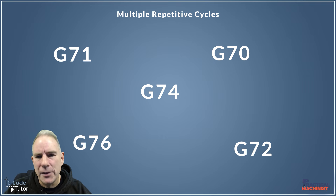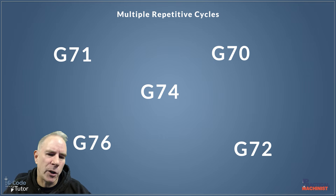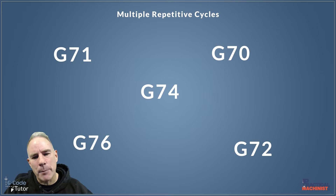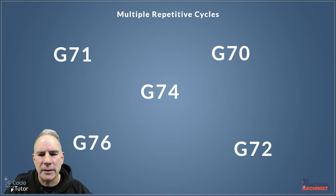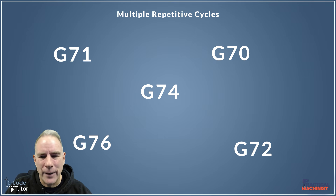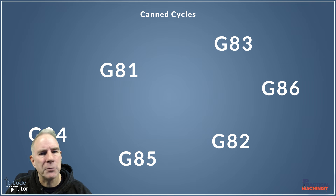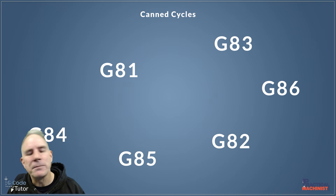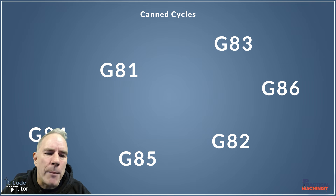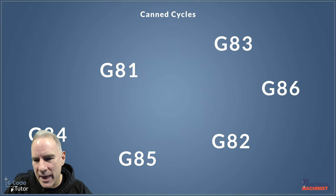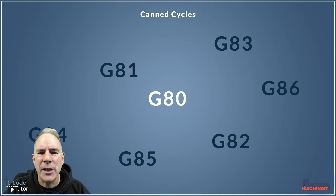Talking of standard G-codes, we use multiple repetitive cycles quite a lot — they help speed up our workflow. We can use roughing cycles for example to remove a lot of material without writing a line of code for each cut, which is especially useful in turning. We also have canned cycles, which shouldn't be confused with repetitive cycles — canned cycles are things like drilling cycles and boring cycles. These need to be cancelled with a G80 once they're done; otherwise the machine still thinks it's in that mode and it's going to behave strangely.